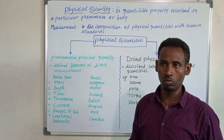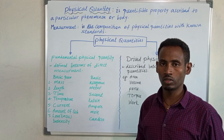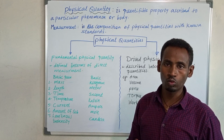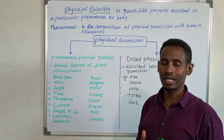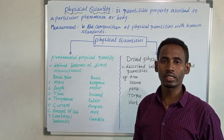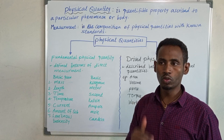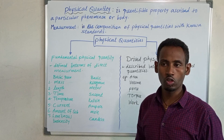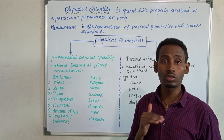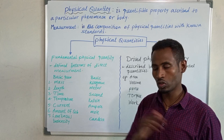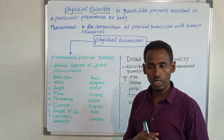Traditional measurements are used to measure things and to have quantitative information about certain physical quantities, but it is not real, it is not standard, it is not uniform throughout the universe or throughout the world. The other type of measurement is known as modern measurement.